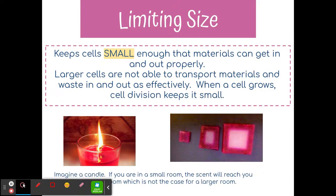Lastly, a cell will divide to limit its size. Cells need to be kept small so things can get in and out properly. If a cell gets too big, materials can't move in or out and the cell will die. Imagine a candle in a small room — you can smell it well. In a really large room, you won't smell it. So cells divide to keep their size limited.